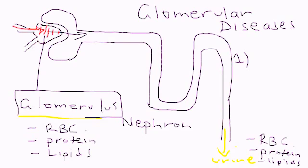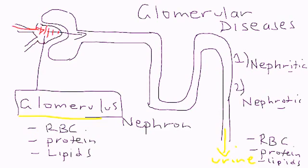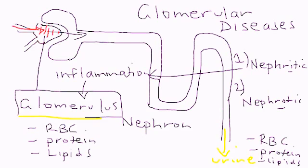Now there are two main categories of glomerular diseases. The first is called nephritic — with an I. Nephritic refers to the fact that there's inflammation here at the glomerulus. That glomerular inflammation can lead to red blood cells and protein passing through and getting into the urine.